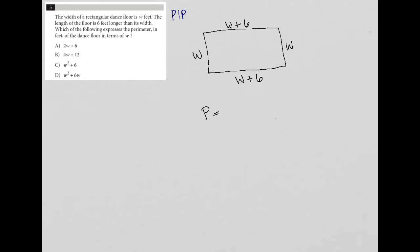And now when I add everything together, I have W plus W, which is two W. Then I have W plus six plus W plus six, which would be plus two W plus 12. And then I simplify that even further and combine like terms. I have four W plus 12 as the perimeter.